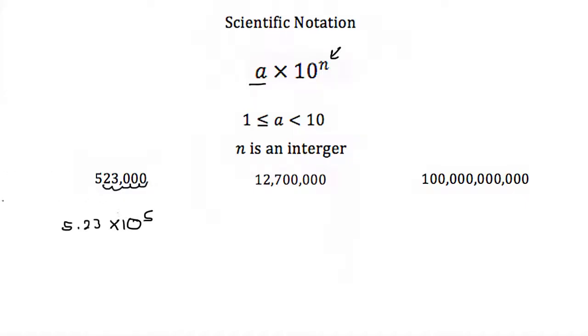So how did I come up with that? Well, 10 to the 5th power is equal to 100,000, and if I take 523,000 and I divide it by 100,000, I get 5.23, but then I just multiply that 100,000 back on as 10 to the fifth.